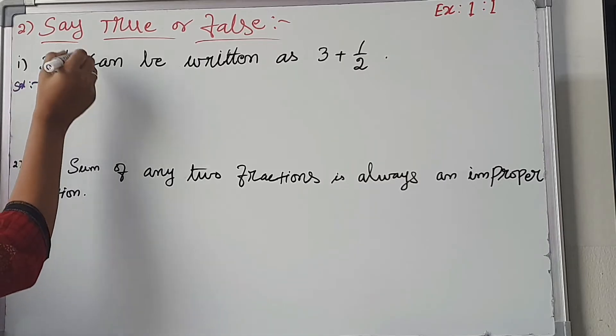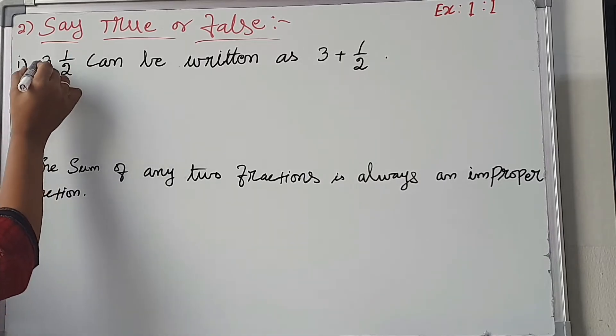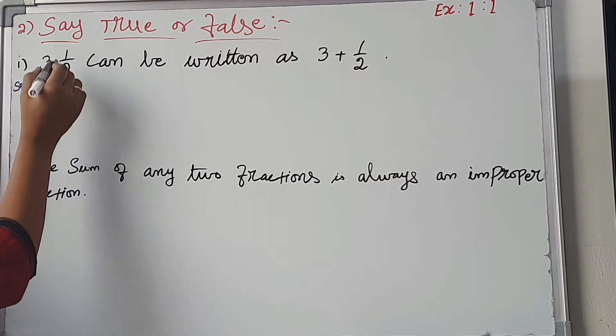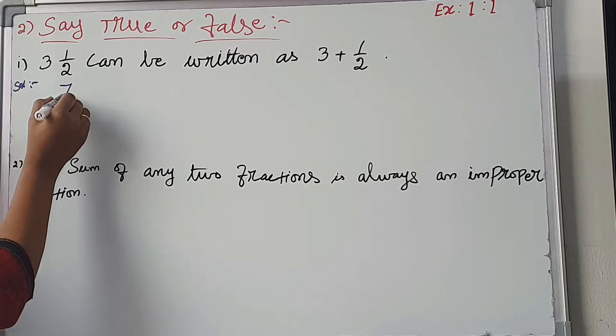3 and 1 by 2 can be written as 3 plus 1 by 2. 3 2's are 6, plus 1, that gives us 7 by 2.